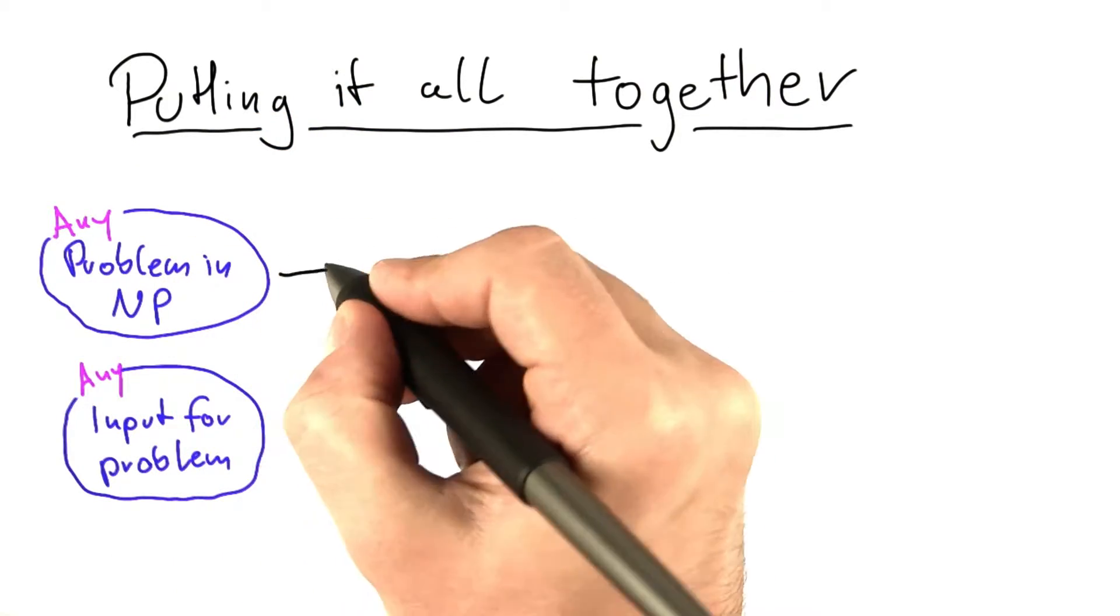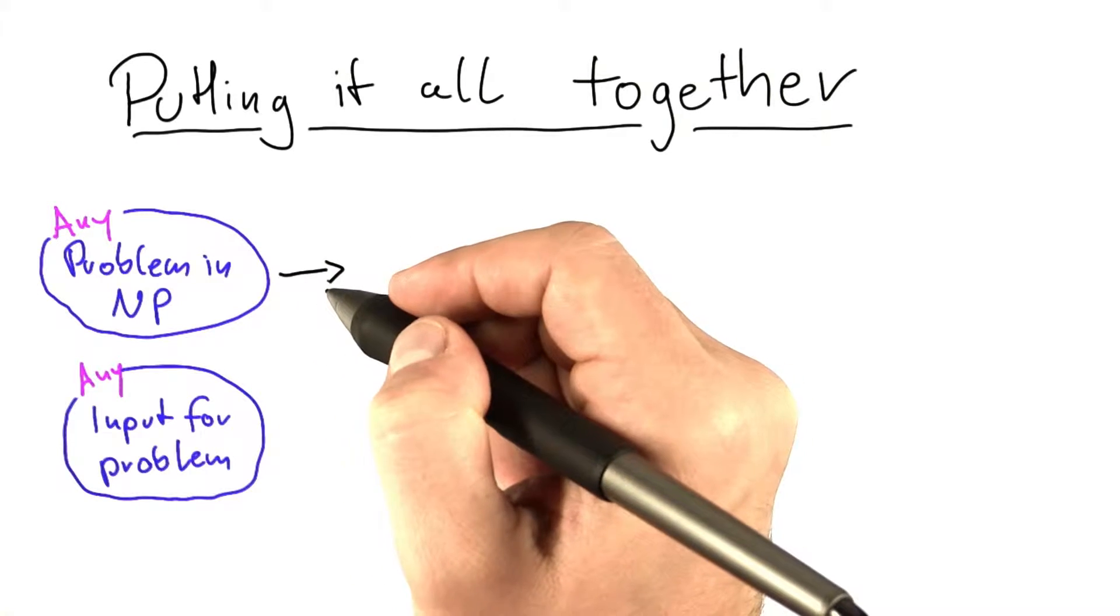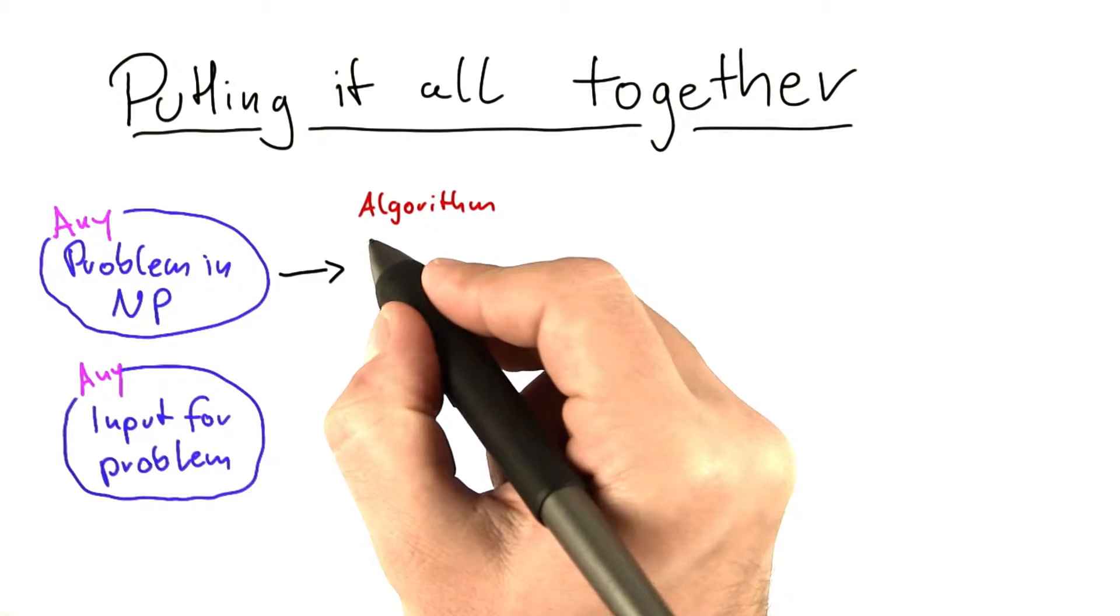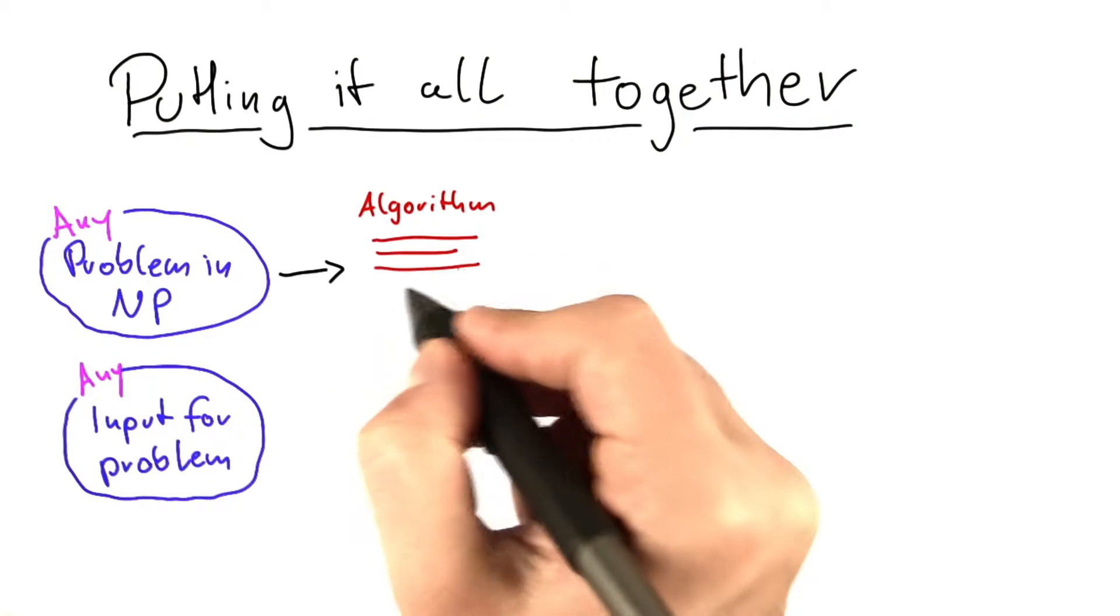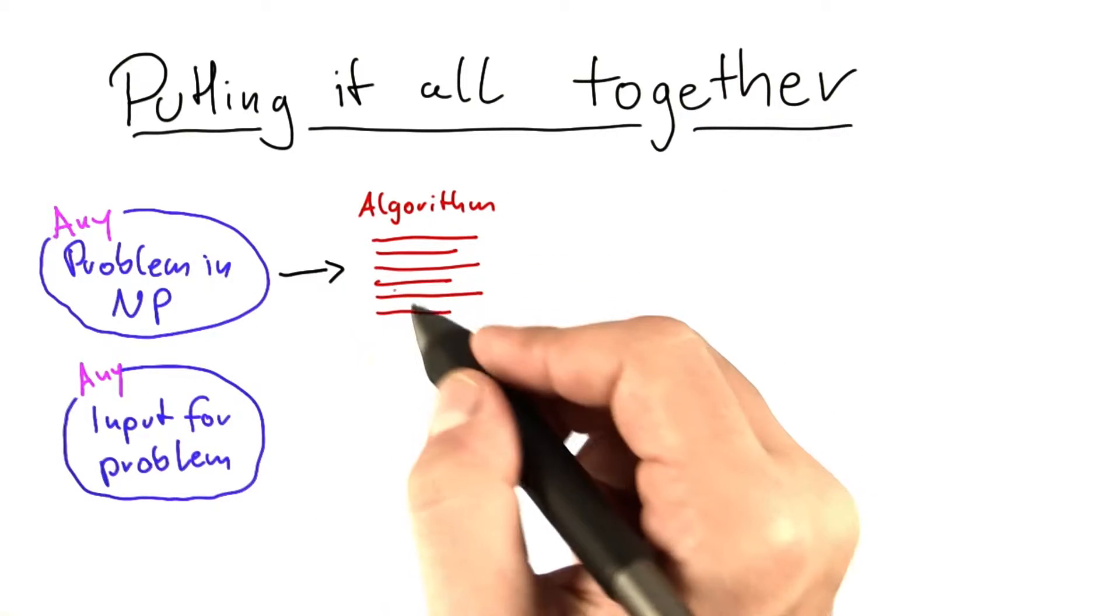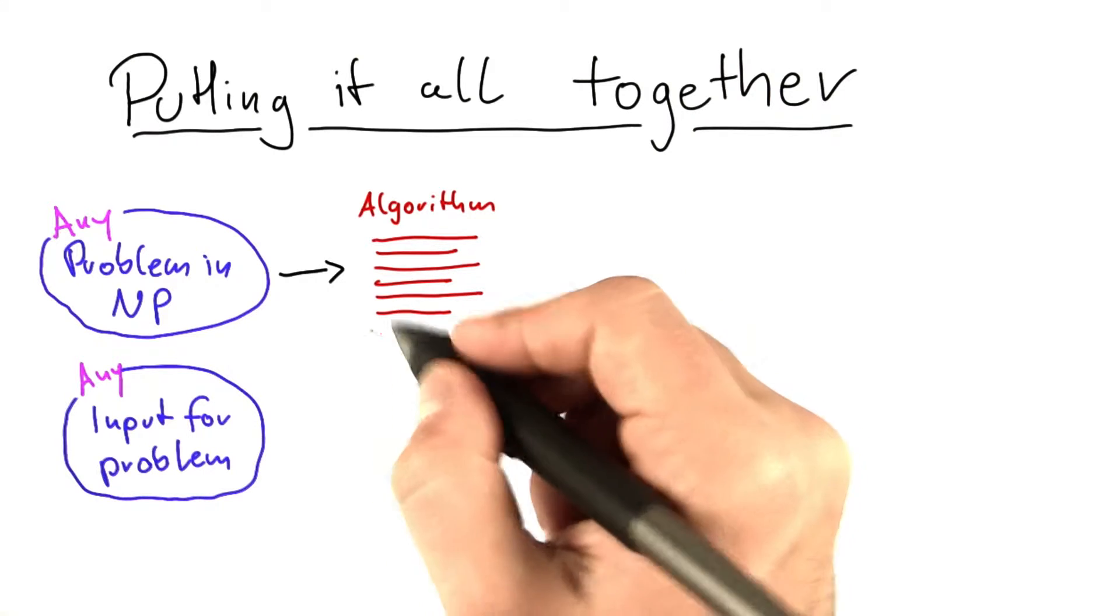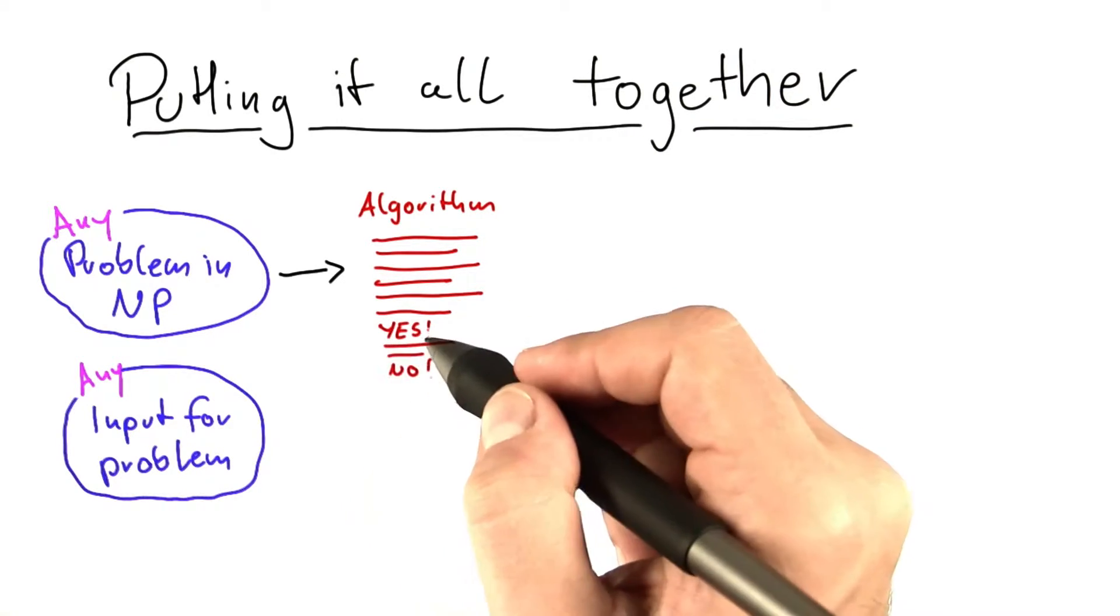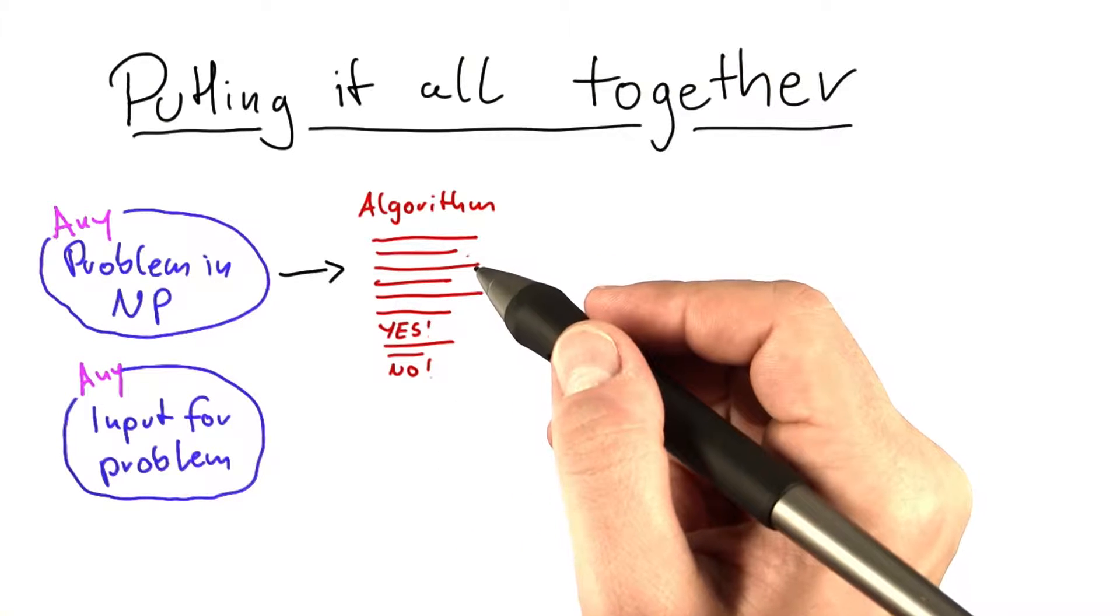We said if the problem is in NP, then there must be some algorithm for that problem which runs in polynomial time on a non-deterministic RAM. So an algorithm or a program, you can call it any way you want. That will run in polynomial time. And the algorithm at some lines of the code either says yes or it says no, but it's running in polynomial time in any case.